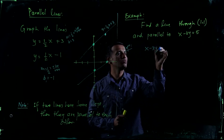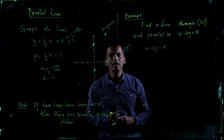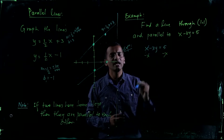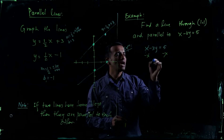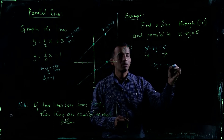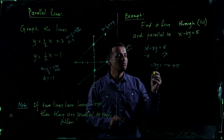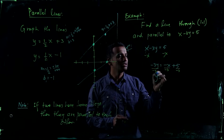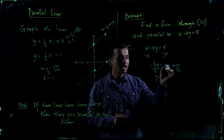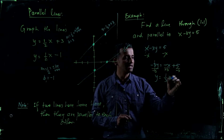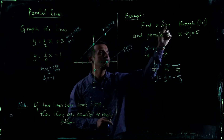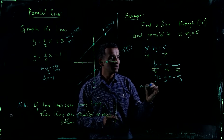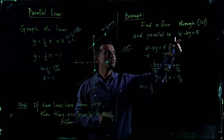You have x minus 3y equals 5, and you want to solve for y. Subtract x from both sides: negative 3y equals negative x plus 5. Then divide by negative 3: y equals one-third x minus five-thirds. So the slope m of this given line is one-third.